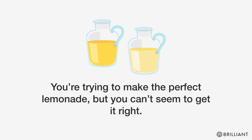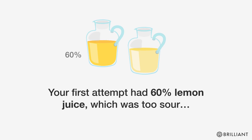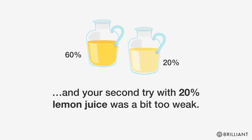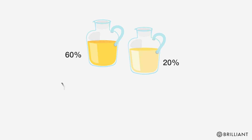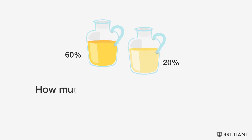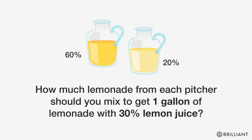You're trying to make the perfect lemonade, but you can't seem to get it right. Your first attempt had 60% lemon juice, which was too sour. And your second try with 20% lemon juice was a bit too weak. You think 30% is the perfect middle ground, but you're out of lemon juice. How much lemonade from each pitcher should you mix to get one gallon of lemonade with 30% lemon juice?